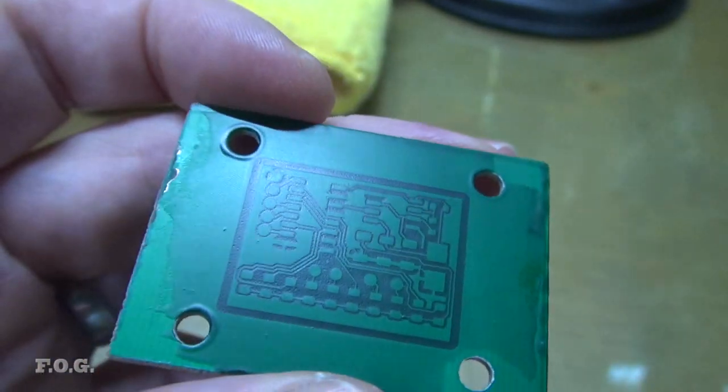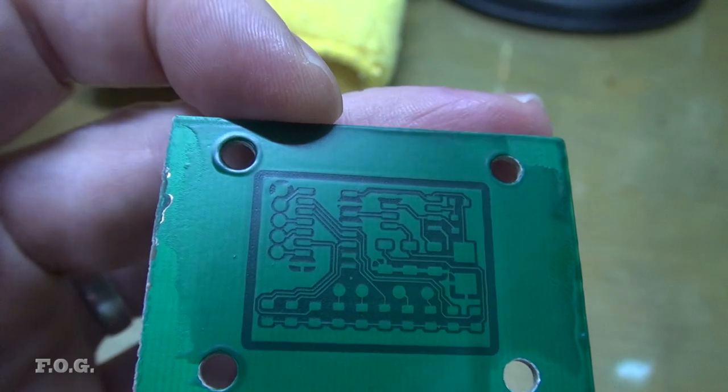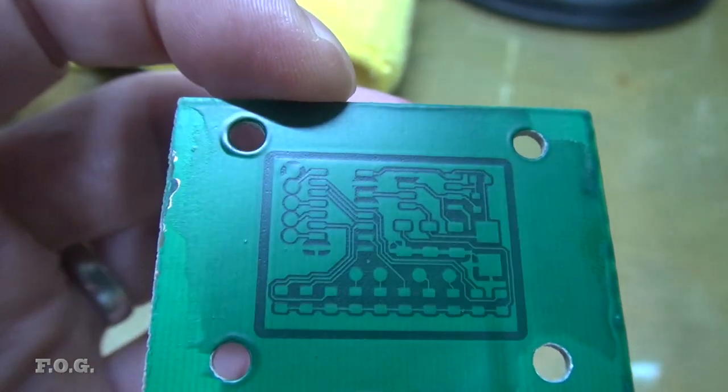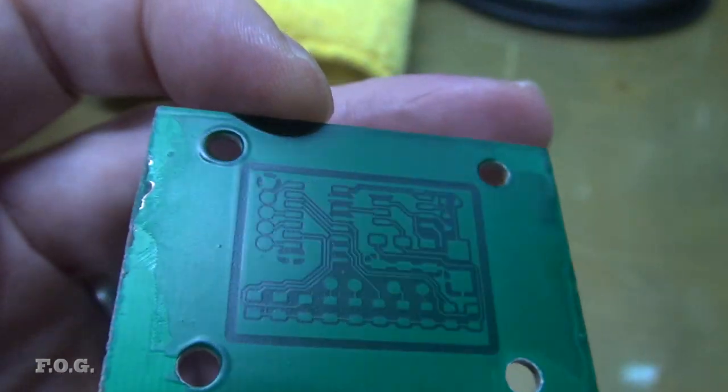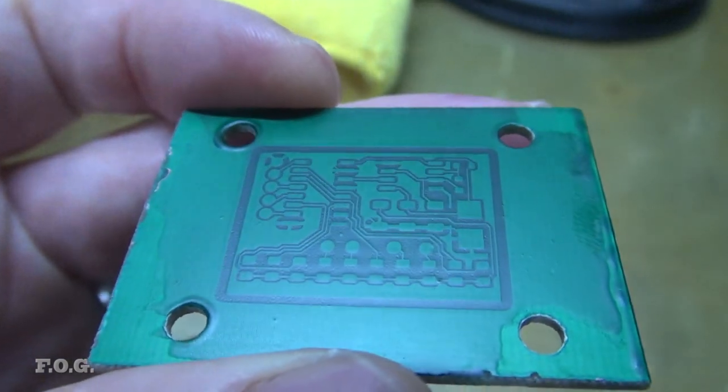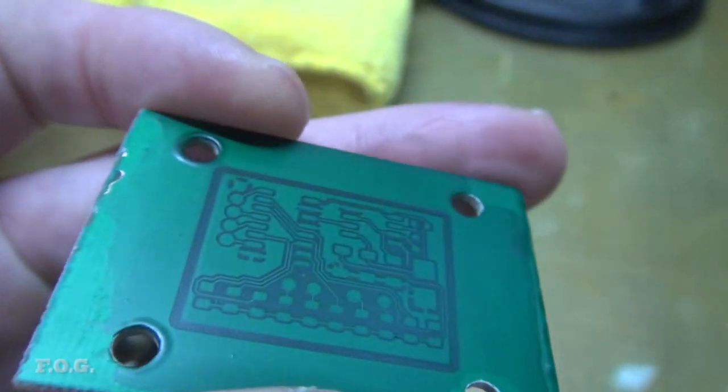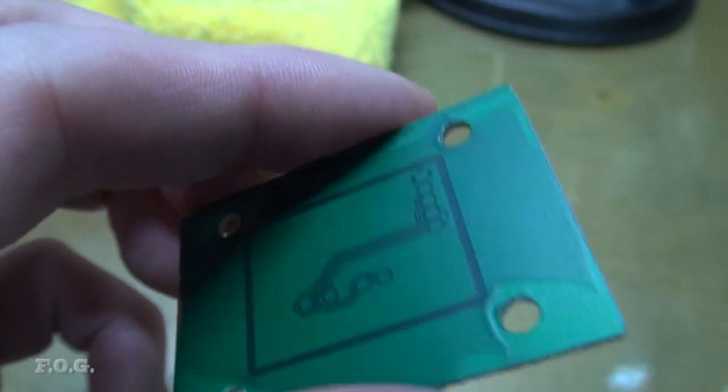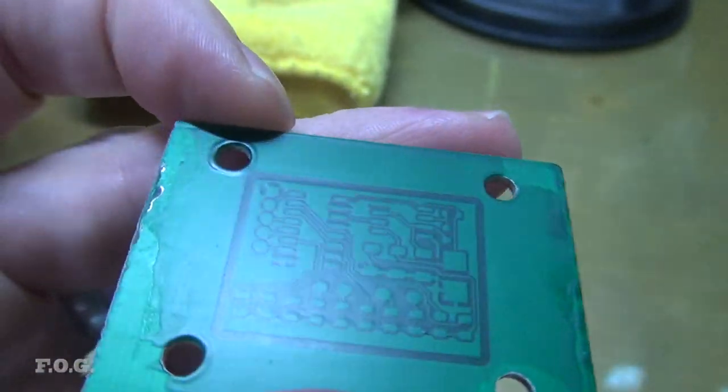So next up I'm going to try and burn in some slots for the silkscreen text and see if I can then wipe in some white resin. I'm not feeling that confident which is why I decided to keep going and if this is a fail I might try for a third one and fix up those small errors on this board.